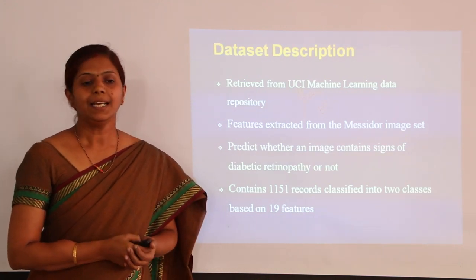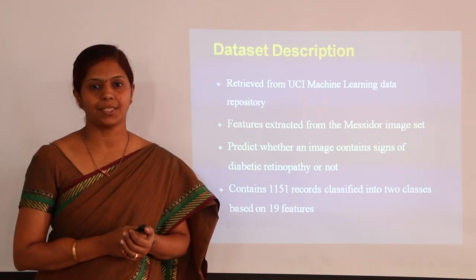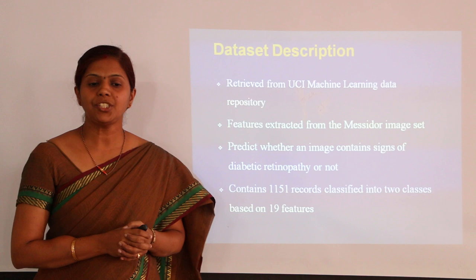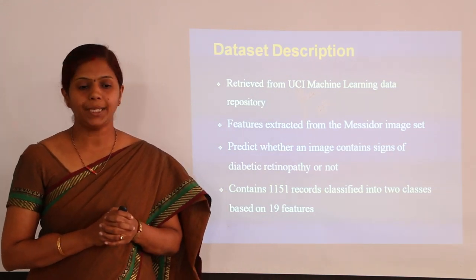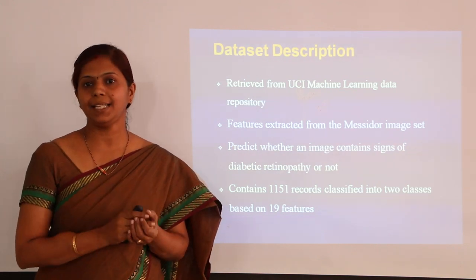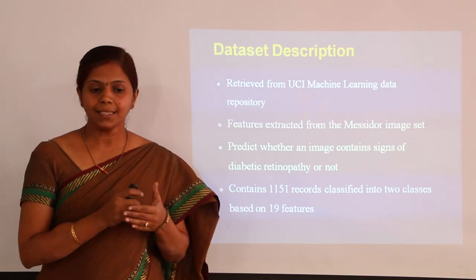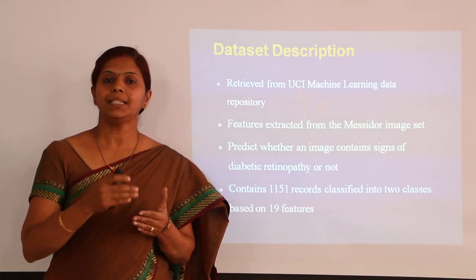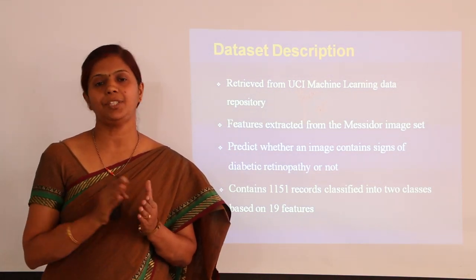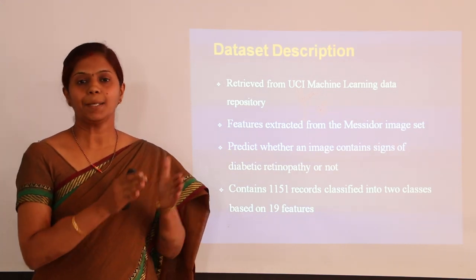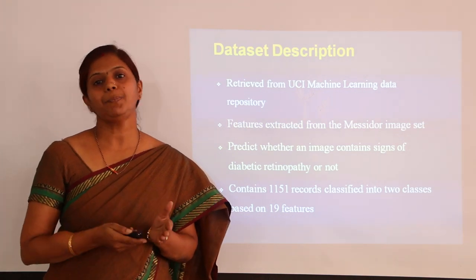For the present study, the dataset is retrieved from the UCI Machine Learning Repository. The dataset contains features extracted from fundus image sets and is used to predict whether an image contains signs of diabetic retinopathy or not. The dataset contains 1151 records classified into two classes based on 19 features. Class 1 indicates presence of retinopathy; Class 0 indicates absence of retinopathy.